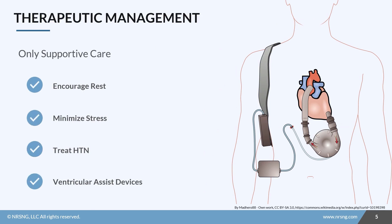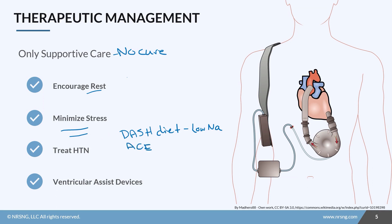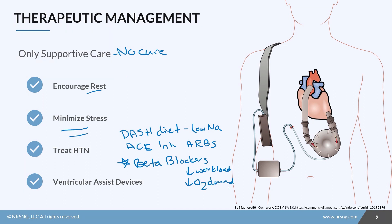When it comes to therapeutic management, in most cases there's no cure — a lot of times it's only supportive care. That involves similar things we'd do for a heart failure patient: encouraging rest, clustering activities, minimizing stress, and treating hypertension if that was a cause. This could include the DASH diet, sodium restriction, ACE inhibitors, or ARBs. The medication that makes the biggest difference in cardiomyopathy is beta blockers — they decrease the workload on the heart by decreasing the force of contraction and reducing oxygen demand.